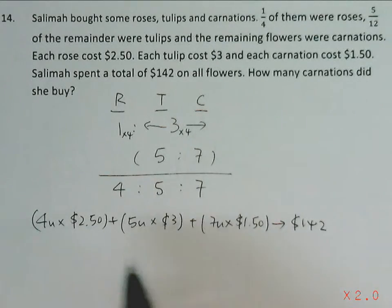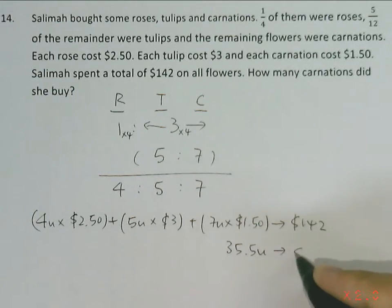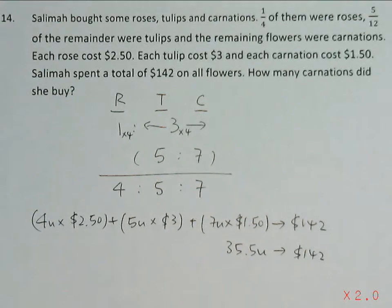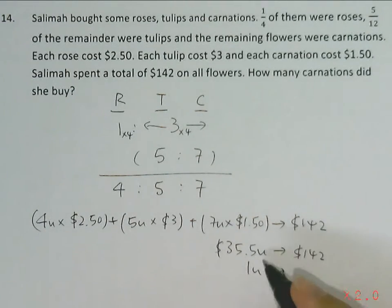From here, if we work this out, we'll have a total of 35.5 units, which will be $142. So we see that 1 unit will be 142 divided by 35.5, which gives us 1 unit equals 4.